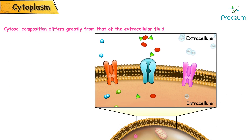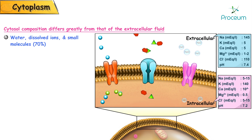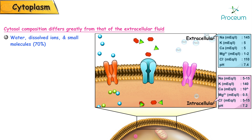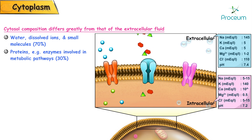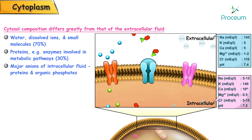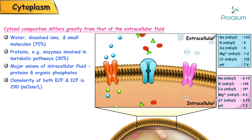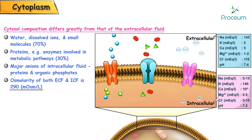Cytosol composition differs greatly from that of the extracellular fluid. Water, dissolved ions, and small molecules constitute about 70 percent, while proteins like enzymes involved in metabolic pathways account for about 30 percent of the total composition of cytosol. The major anions of intracellular fluid are proteins and organic phosphates. Osmolarity of both the extracellular and intracellular fluid compartments is 290 milliosmoles per liter.